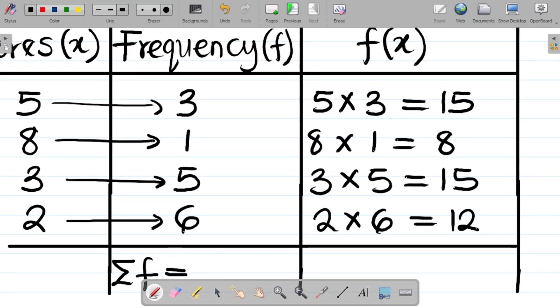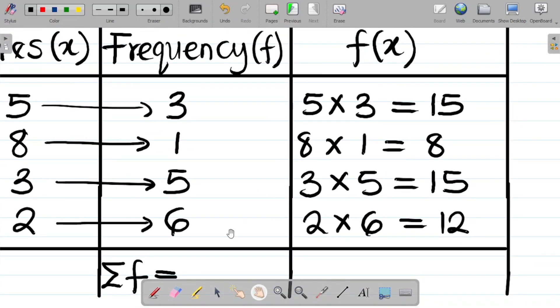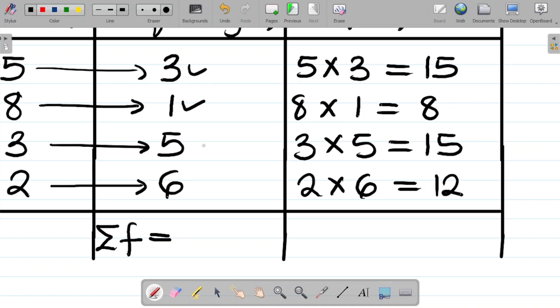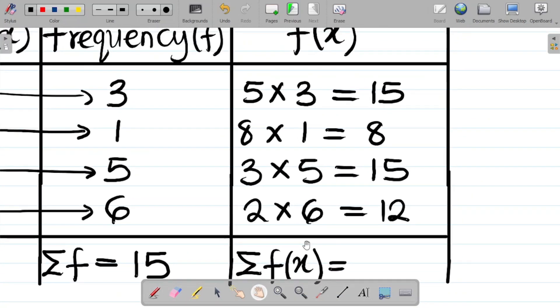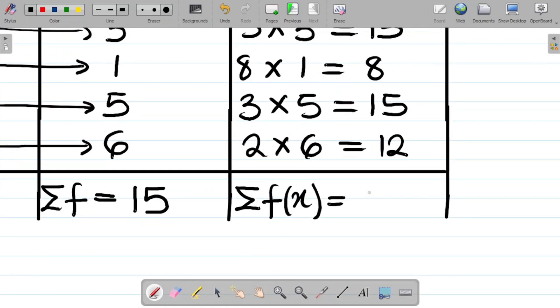And that's equal to, so basically what this means is that I'm adding all the numbers in the frequency column. And if I add that, that becomes 3 plus 1, that's 4, 4 plus 5, that's 9, 9 plus 6, that's 15. So if I sum the frequency there, I have 15 as the sum of the frequency. Let's get for fx. If I sum the product of them, that becomes 15 plus 8 plus 15 plus 12, that gives you 50. This is equal to 50 if I sum this up.